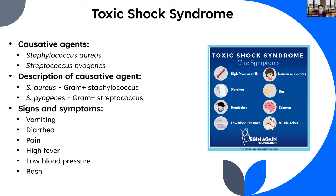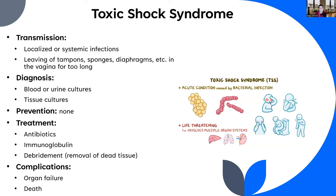Toxic shock syndrome is usually caused by Staphylococcus aureus or Streptococcus pyogenes — both gram-positive. Signs and symptoms include vomiting, diarrhea, pain, high fever, low blood pressure, and rash. The most common cause we see now is leaving tampons, sponges, or diaphragms in the vagina for too long, resulting in overgrowth of these bacteria in the wrong place.